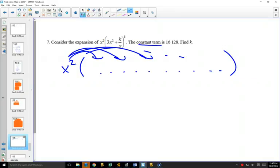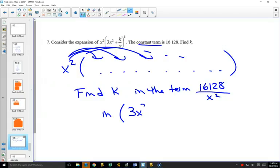After I get all nine of those terms, I'm going to visualize it like this. There's an x squared still in front. And that x squared would get distributed to all of them. We want something for all the x's to cancel out. Well, if that's the case, can you see that this question would be the same as find k in the term 16128 over x squared?